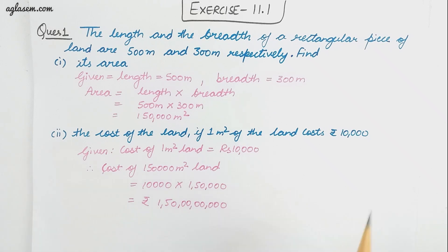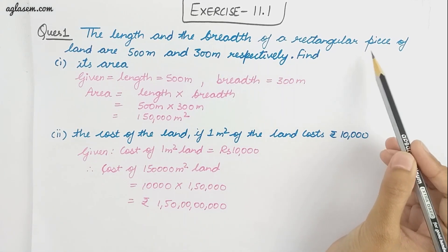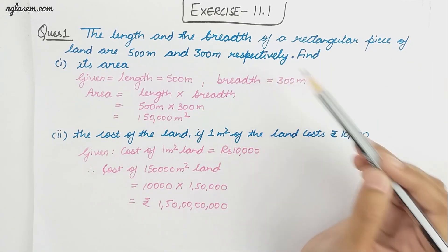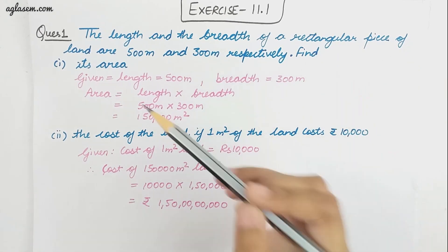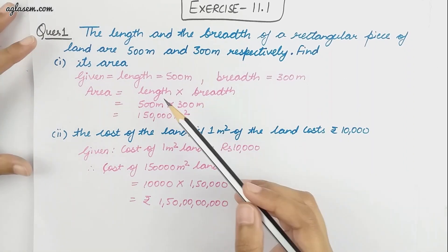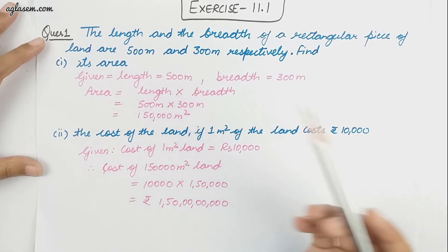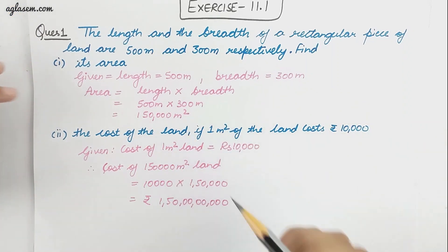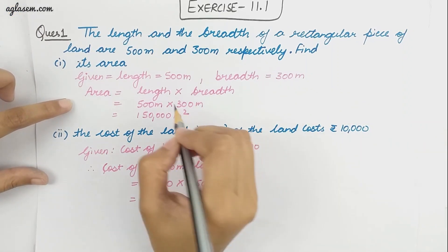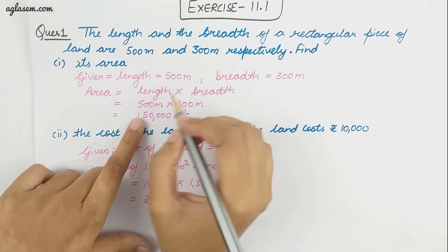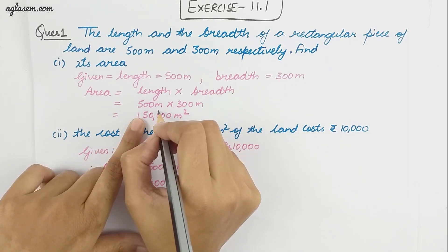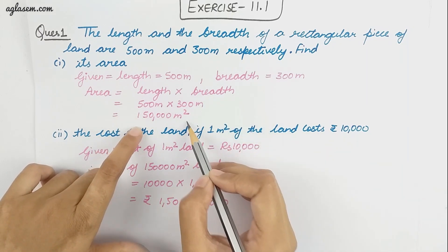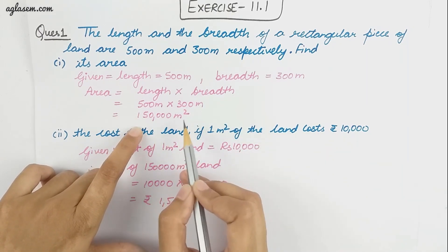Our first question: the length and breadth of a rectangular piece of land are 500 meter and 300 meter respectively. Find its area. The given value of length is 500 meter and breadth is 300 meter. The formula for area of rectangle is length into breadth, so 500 into 300 gives 150,000 meter square.